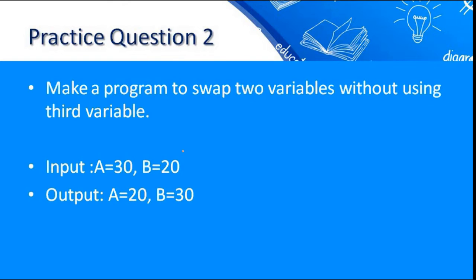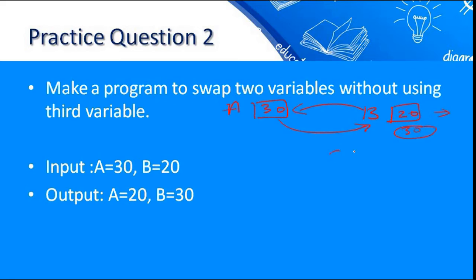Our next practice question is to make a program to swap two variables without using a third variable. We have two variables: a with value 30 and b with value 20. We have to swap the values — the value of a should go to b and the value of b should come to a. If we directly transfer the value of a to b, it will override 20 and 20 will be lost. We also cannot use any third variable to temporarily store a value.